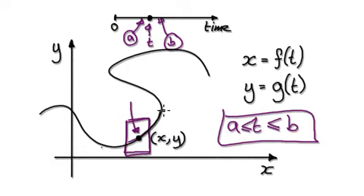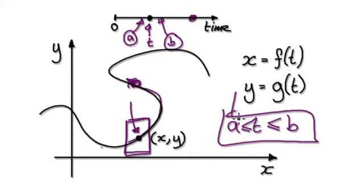So by the time the particle gets around here, there's no confusion because that point is outside of the interval a and b. This point here doesn't really matter. So you can always limit yourself to within this region by limiting the time.